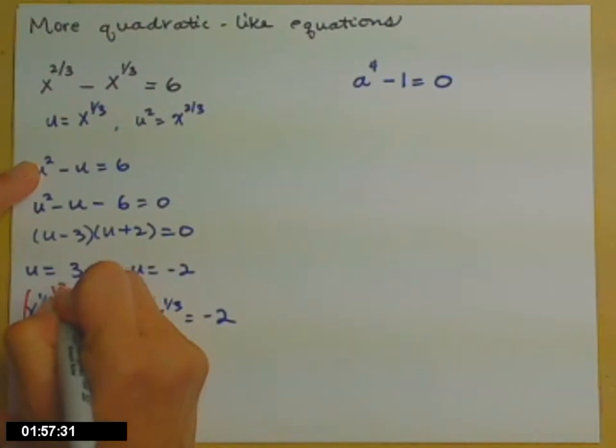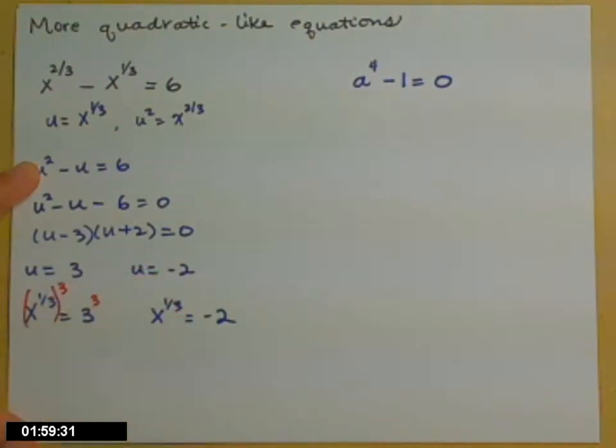So let's do that in red. Let's cube both sides. x to the one-third cubed just gives me x, and three cubed is twenty-seven. Make sure you don't have nine there. It's three times three times three.